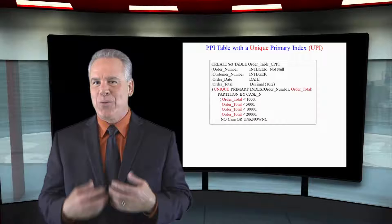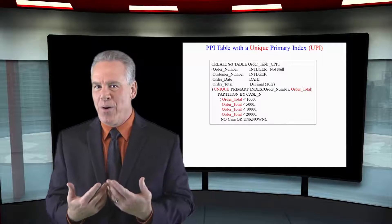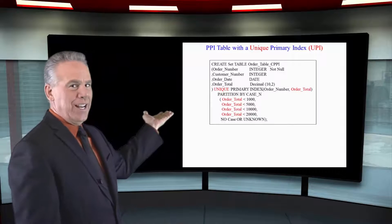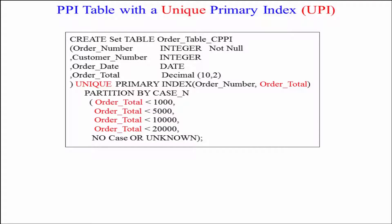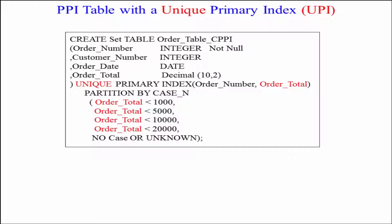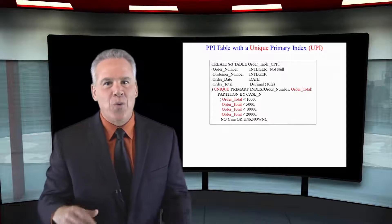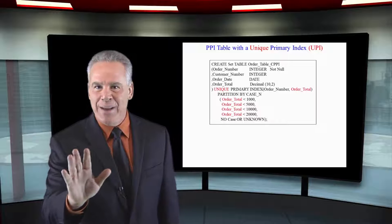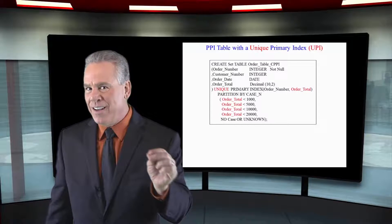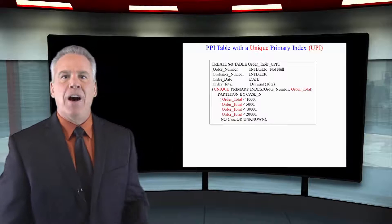Here is an example to really bring the point home. Notice that we have a unique primary index, a NUPI. It's a multi-column NUPI on order number and order total combined. Then we're doing a case end statement. Our partitioning statement is on order total. Since our partitioning statement is part of the primary index, we can make it unique, and that's the only time you'll ever see a unique primary index in a partition table.